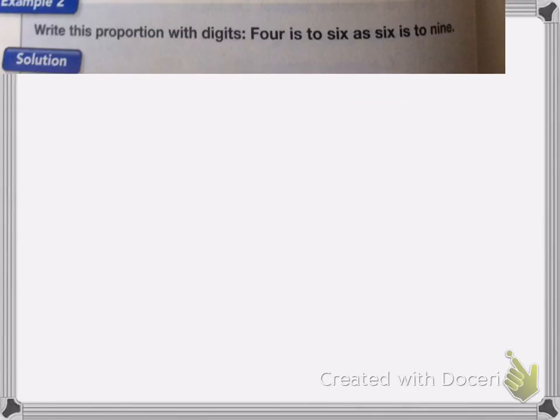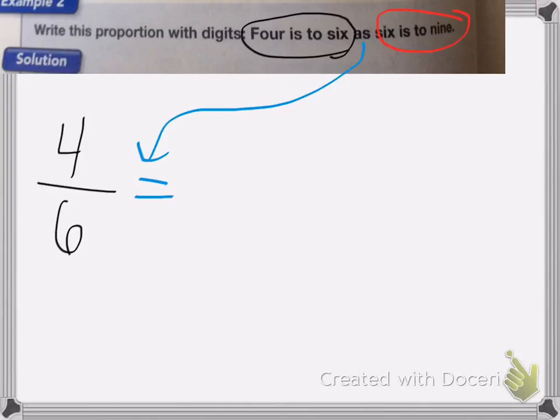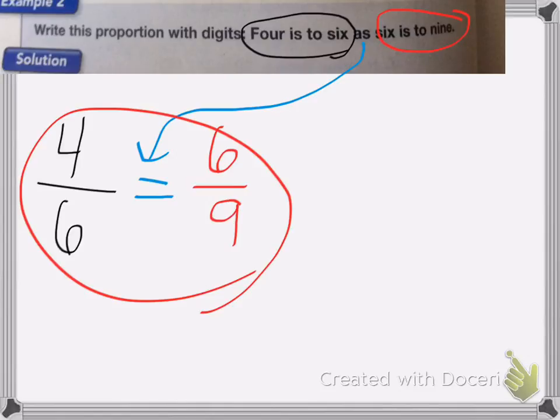Here we want to write out a proportion with digits, so numbers. Four is to six as six is to nine. The way we write that is, four is to six is my first proportion, and then six is to nine is my second proportion. Four 'is to' is my division sign, 'as' becomes the equal sign. So this is your full answer: four is to six as six is to nine.